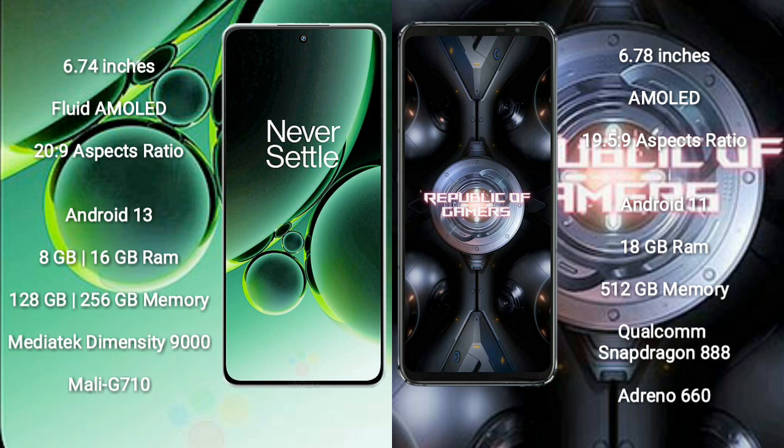OnePlus Nord 3 runs on the Android 13 operating system, while ASUS ROG Phone 5 Ultimate runs on Android 11. OnePlus Nord 3 comes with 8GB or 16GB RAM and 128GB or 256GB internal storage, with a MediaTek Dimensity 9000 processor and Mali-G710 GPU.